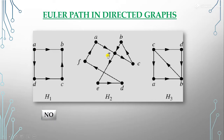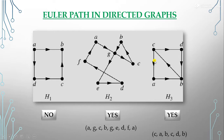The second directed graph forms an Euler circuit, so it obviously also forms an Euler path. The third directed graph forms an Euler path: c, a, b, c, d, b — all edges are covered without repetition, and since the first and last vertices (C and B) are different, it is an Euler path but not an Euler circuit.